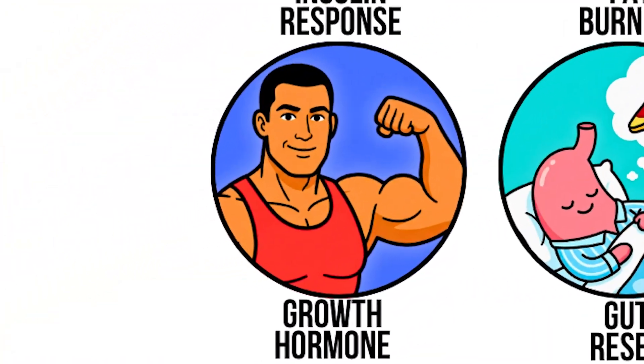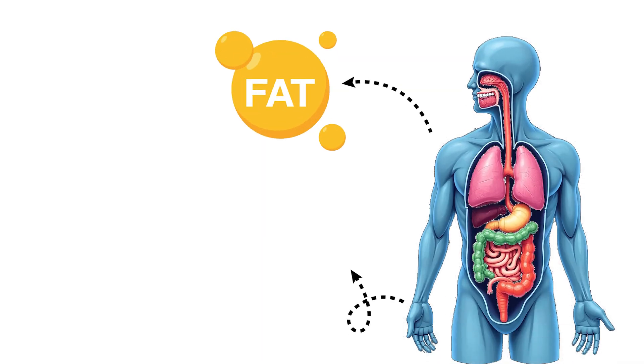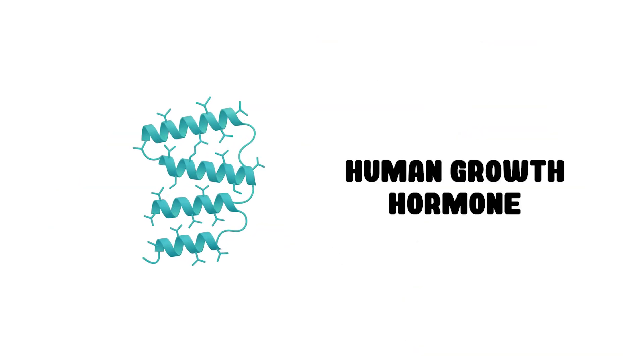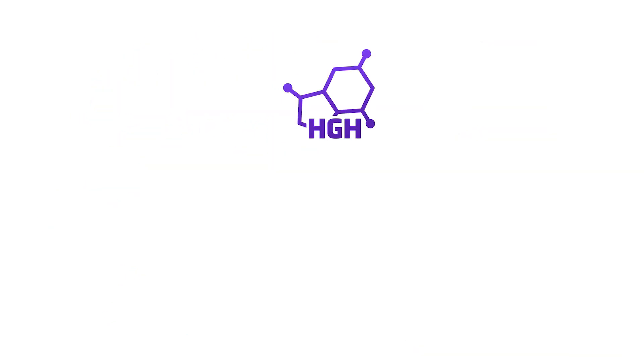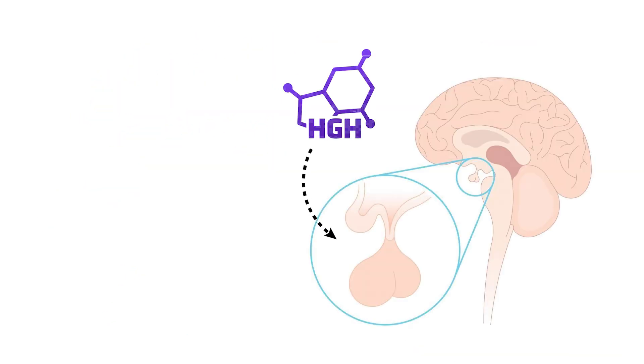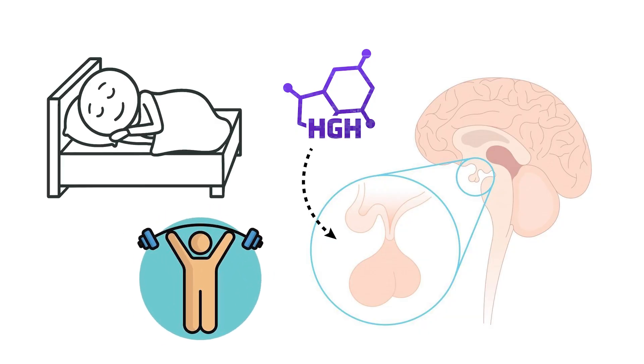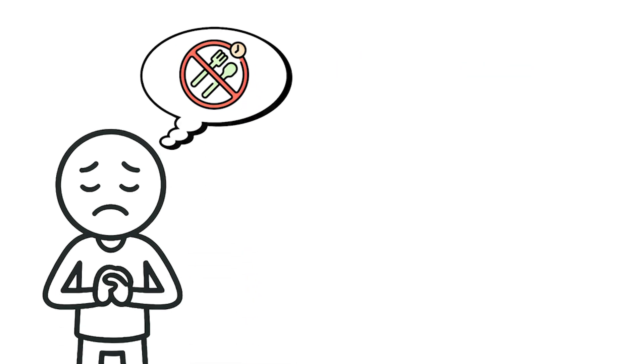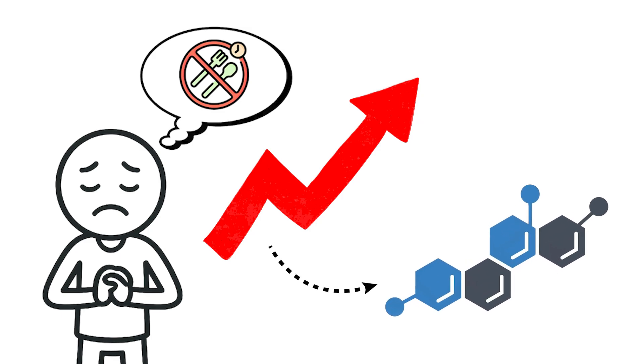Growth hormone increase. While your body breaks down fat and cleans out damaged cells, something else is rising in your bloodstream: human growth hormone. HGH comes from the pituitary gland and usually surges during deep sleep and hard exercise. But fasting triggers one of the biggest natural spikes in growth hormone your body can make.